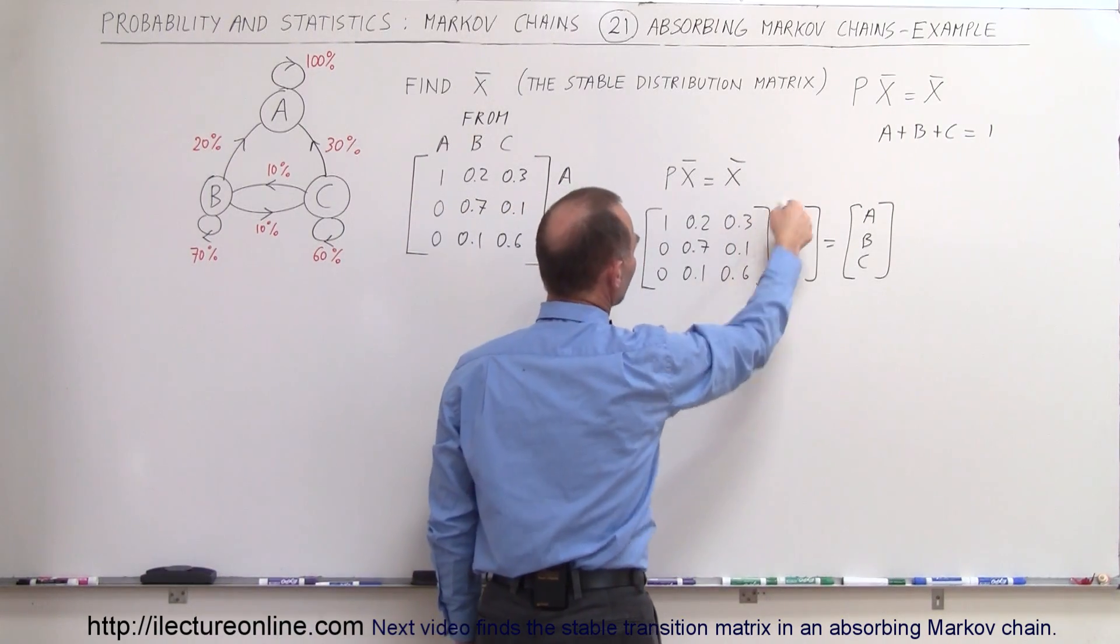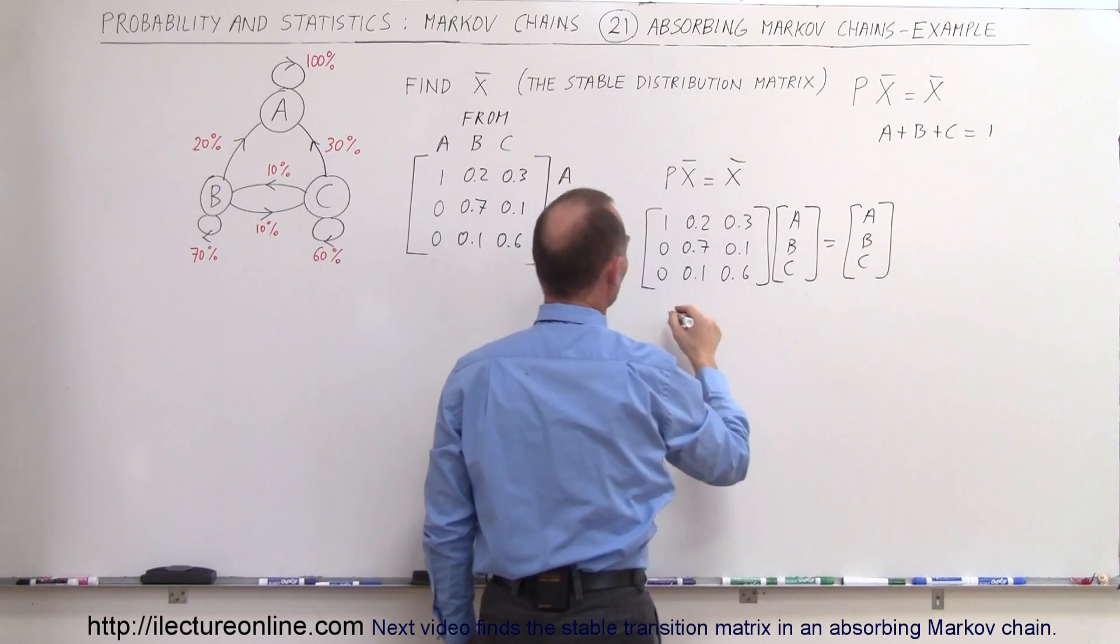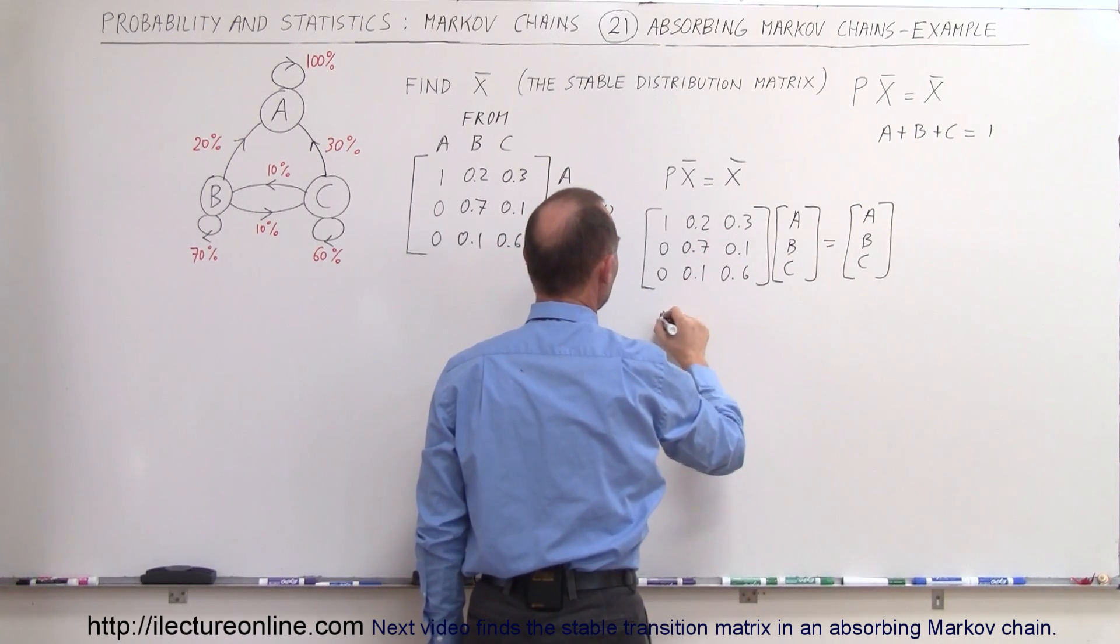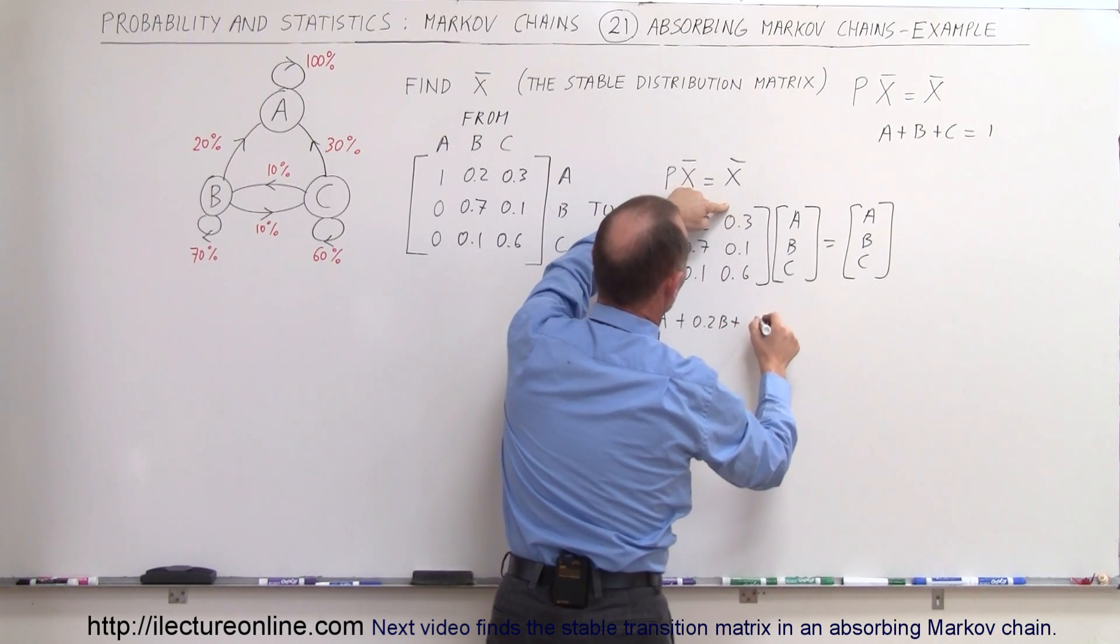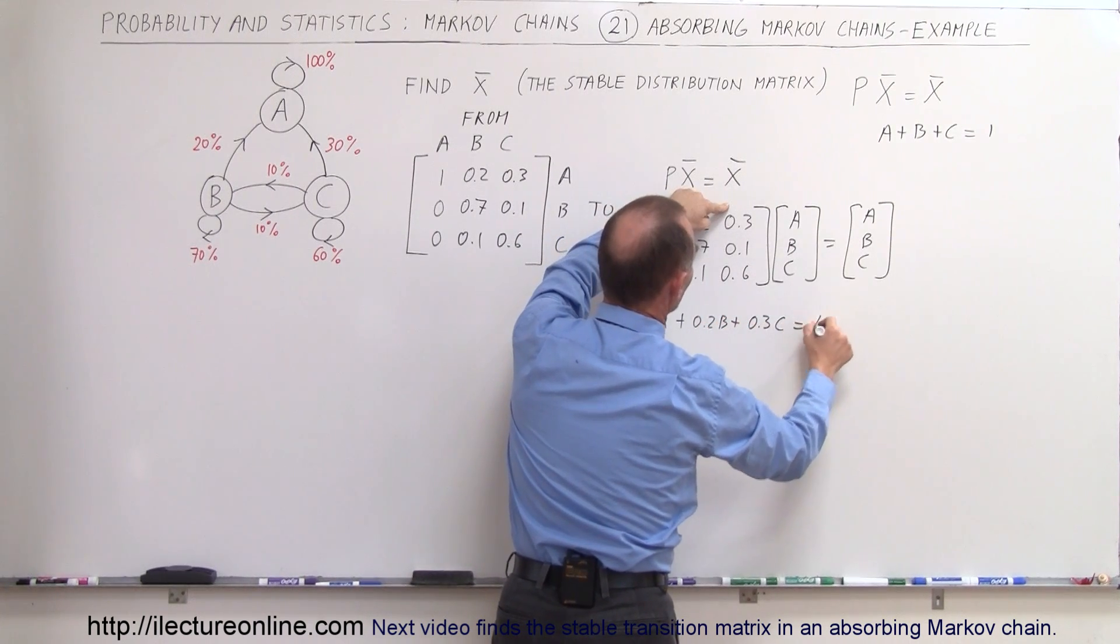We're going to multiply this row times this column to get equal to A. So 1 times A, that would be A plus 0.2B plus 0.3C equals A.